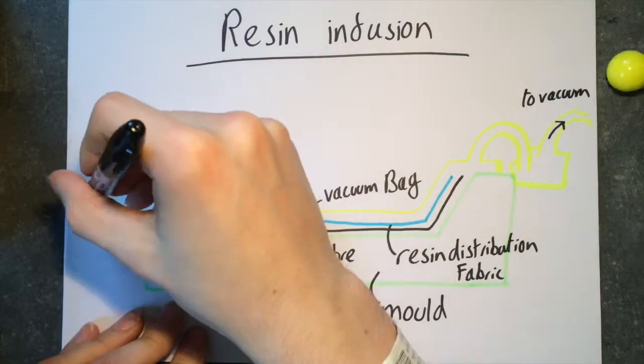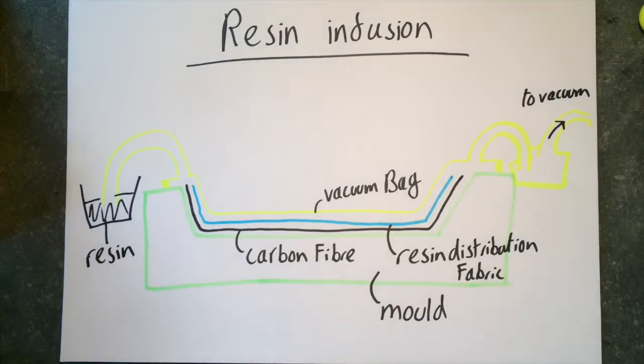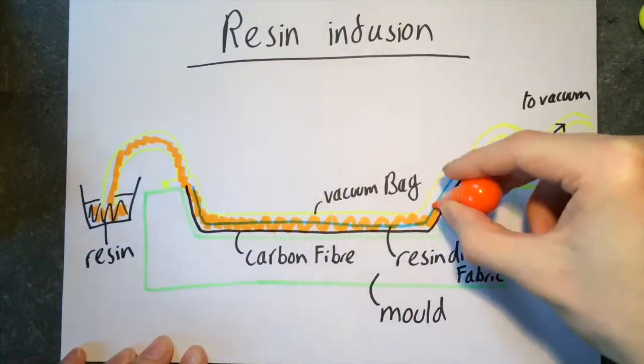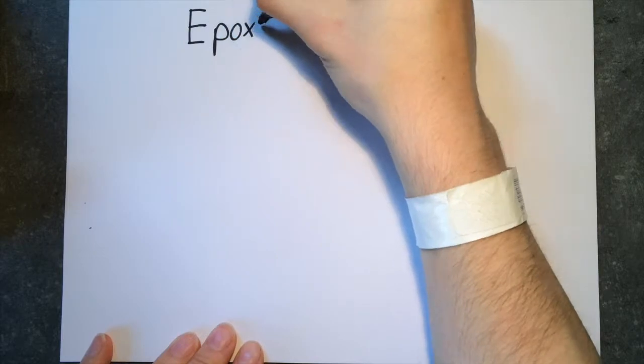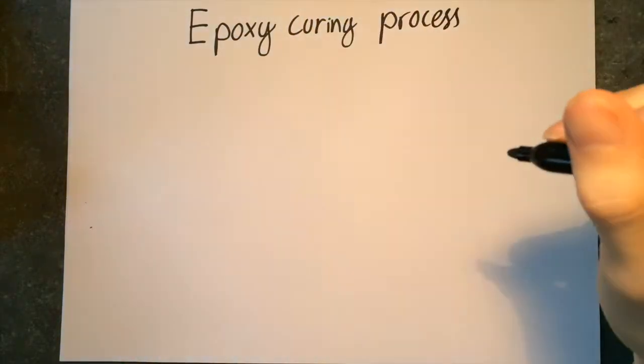We will be focusing on the process of resin infusion, whereby carbon fiber is placed in a mold and vacuum bagged. The resin is fed under vacuum to the part. This generally produces the strongest and lightest part as air bubbles and excess resin are mostly removed.